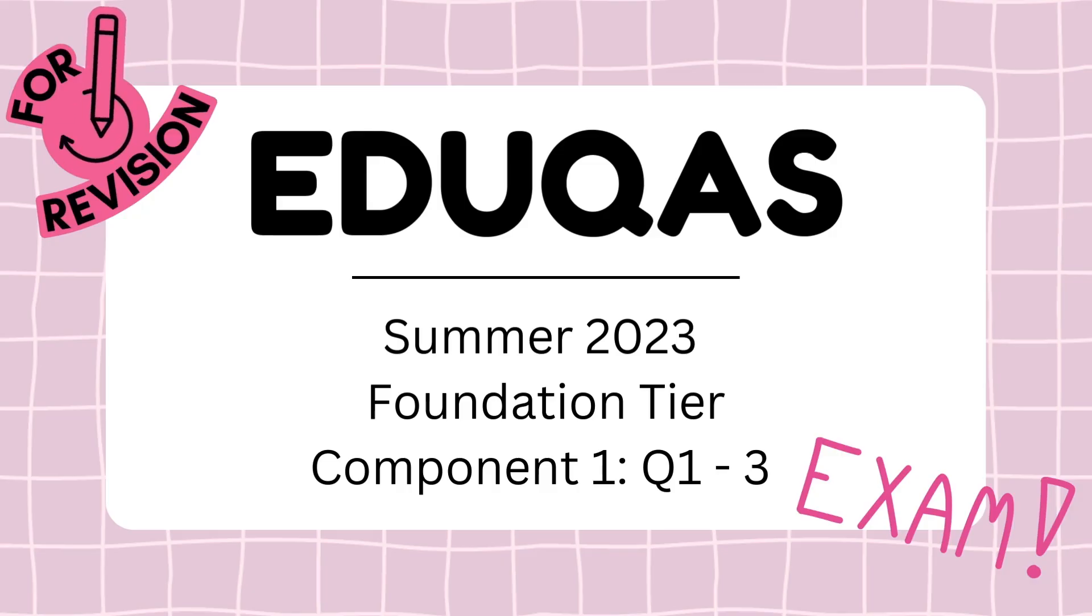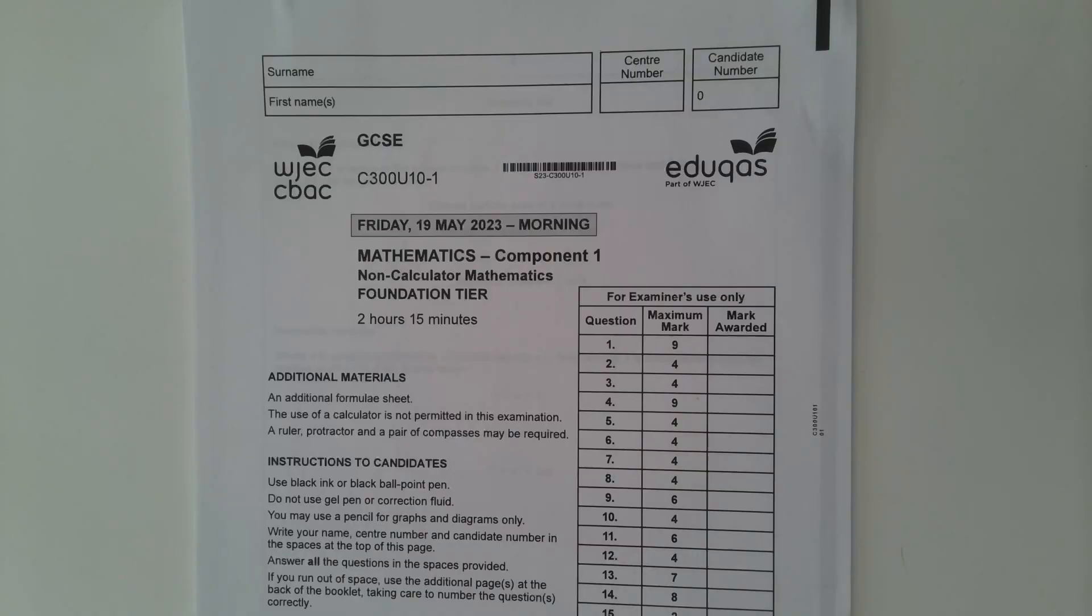Hi there, this video is an exam paper walkthrough of the Eduqas GCSE Mathematics Foundation Tier Component 1 paper from summer 2023. This paper is worth 120 marks in total and this is the first video of six. It will focus on questions 1 to 3 which account for 17 of these marks. Eduqas Component 1 papers are non-calculator papers so a calculator should not be used. A little disclaimer, there may be more than one way to answer a question. The methods shown in this video are not the only way some mathematical skills can be applied. Okay, let's get started.